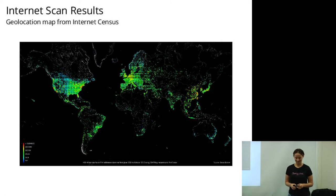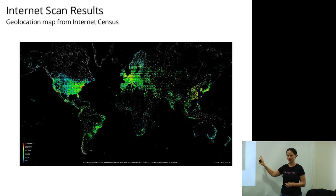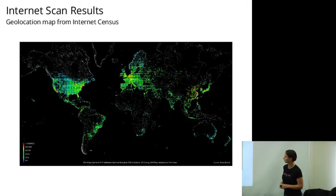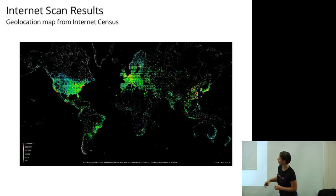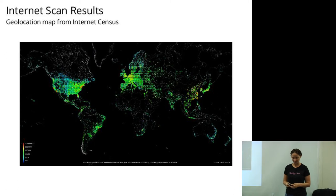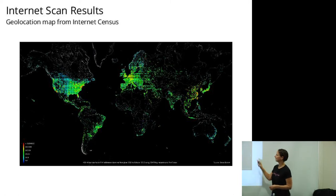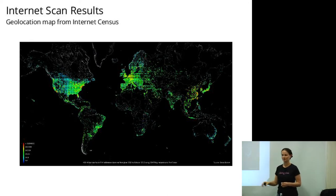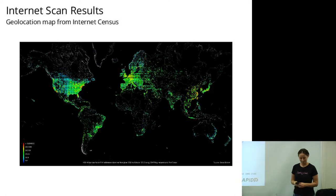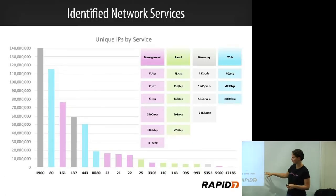The fun thing about scanning is that it turns into interesting results. Here is a map from the internet census botnet survey showing all of the live devices or computers on the network. It looks like a population map, except that Africa is pretty dark. They have many other beautiful maps including one that shows diurnal patterns — the day and night patterns of when devices are on and off — where you can clearly see time zones and also northern versus southern hemisphere differences.